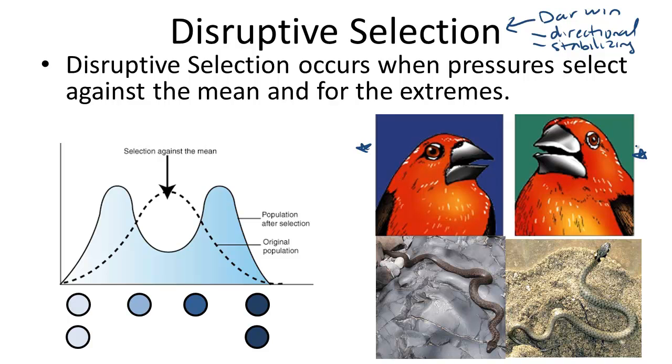As opposed to eliminating the extremes of a population, such as what you would notice in stabilizing selection, here's the mean of a population. This mean or average trait in the population is disrupted.